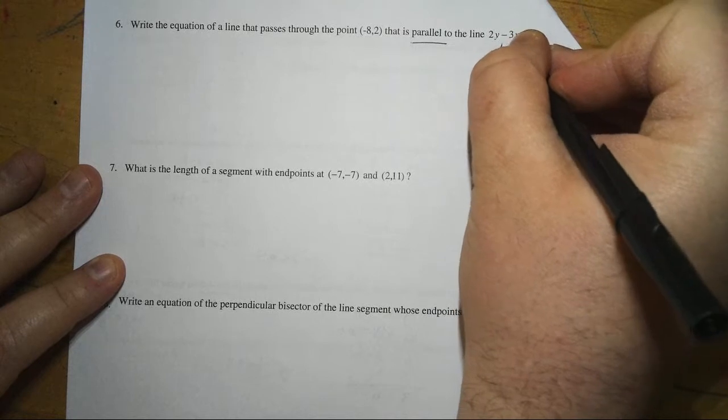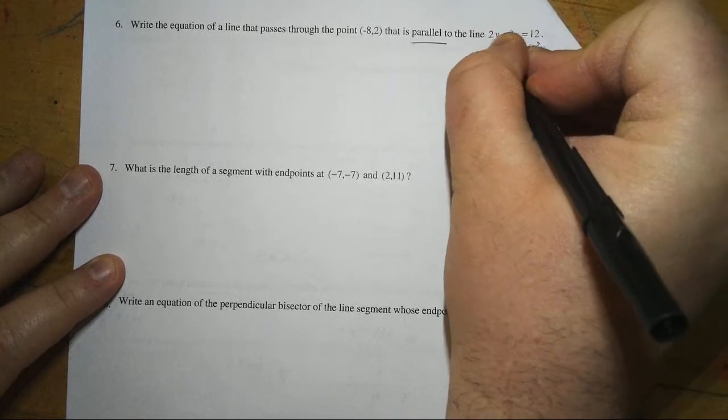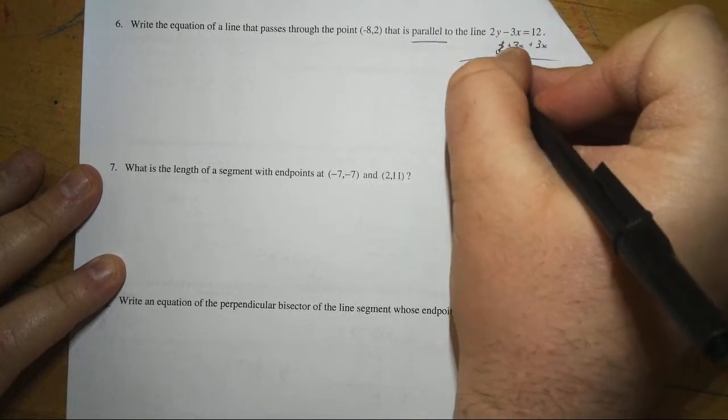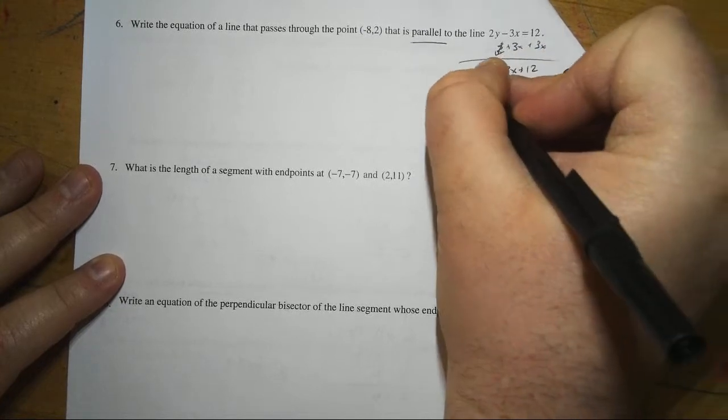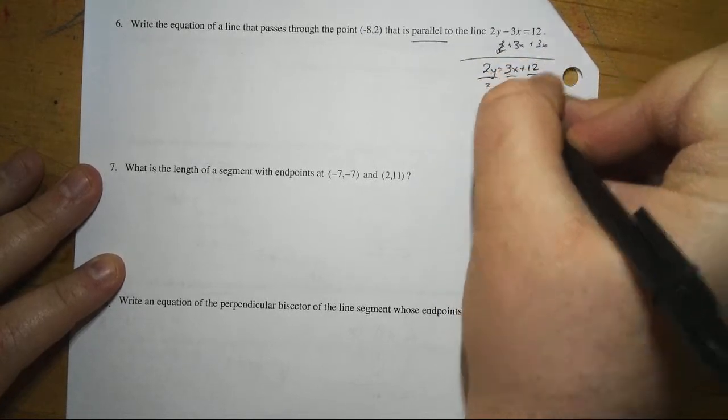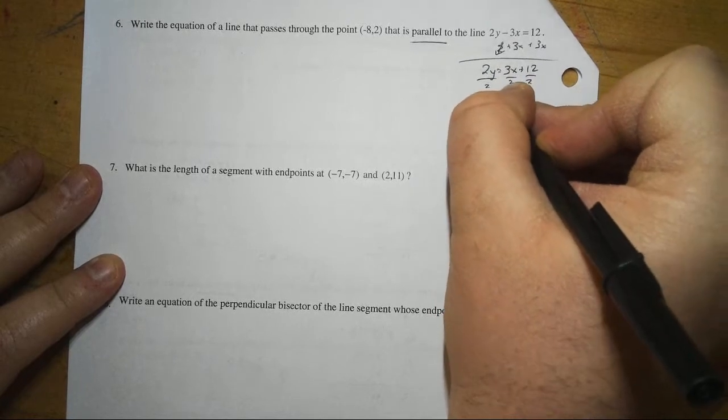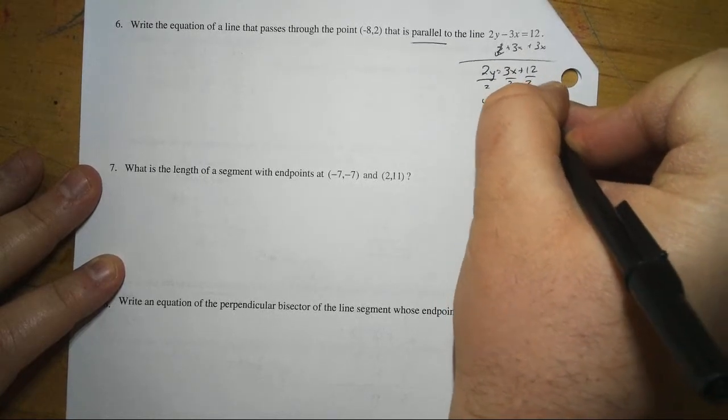What we're going to do is we're going to add the 3x to both sides. So we're going to get 2y is equal to, and once again, we'll put the x first, so it's 3x plus 12. We'll divide by 2, and we're going to get y is equal to 3 over 2x plus 6.